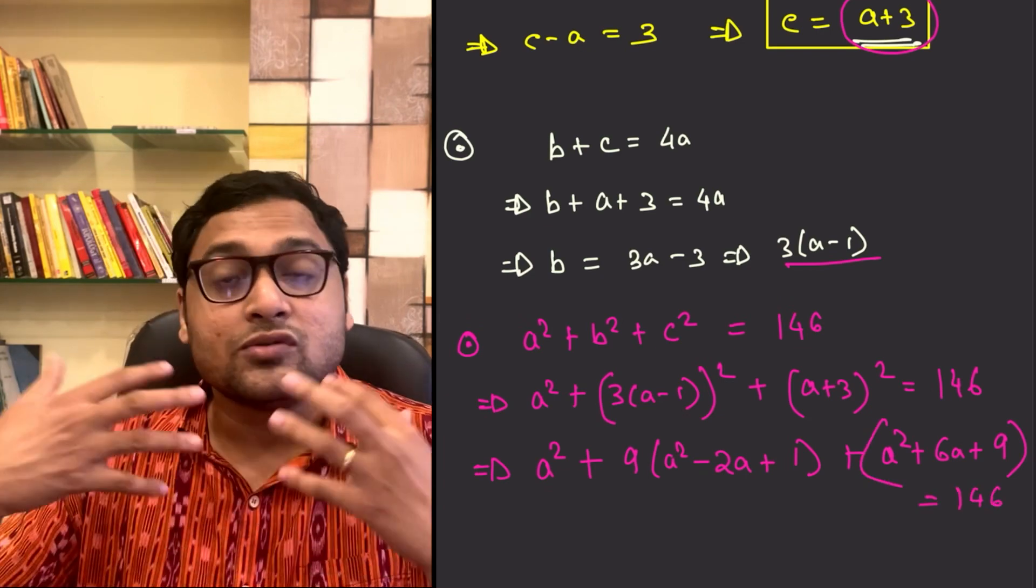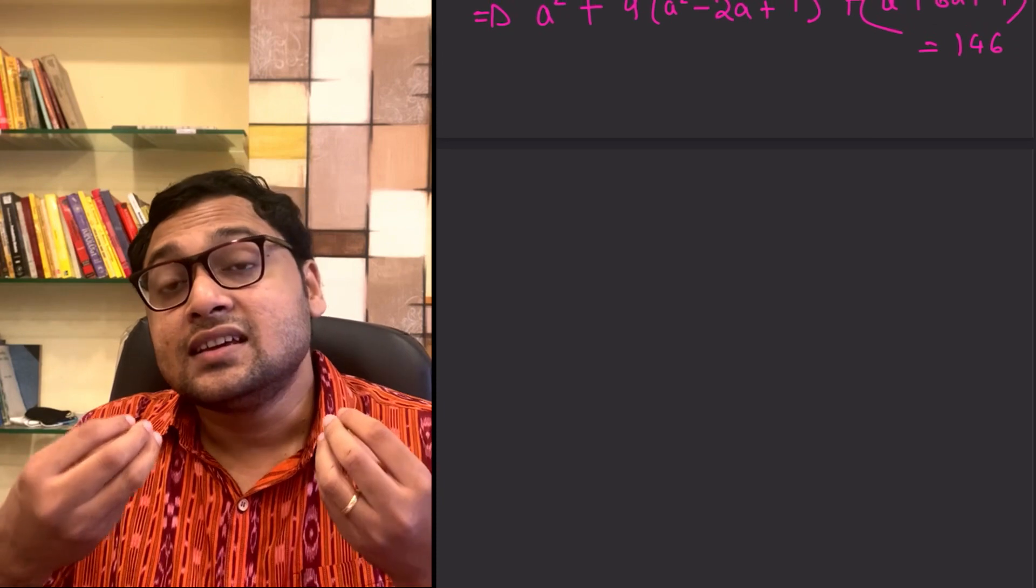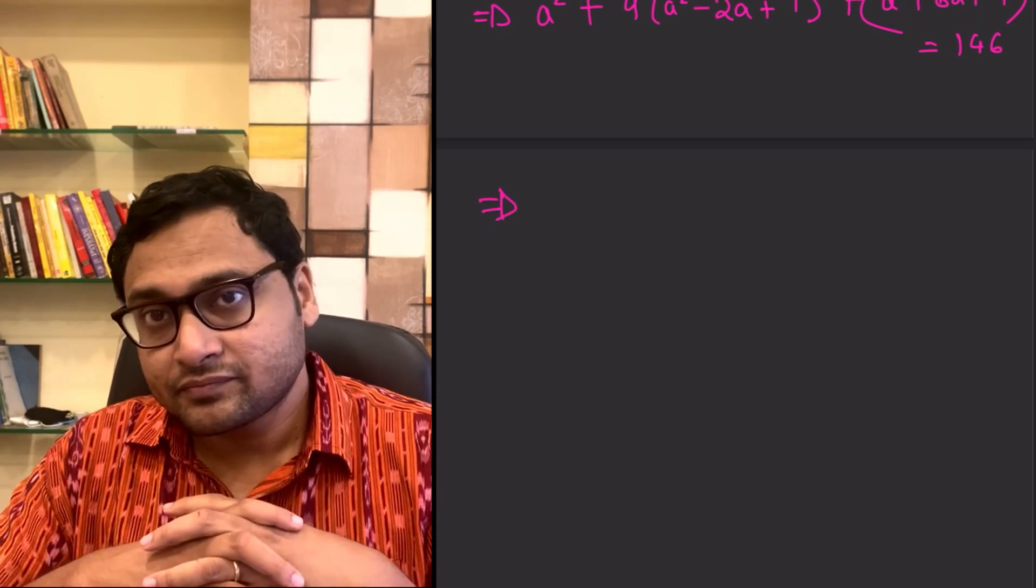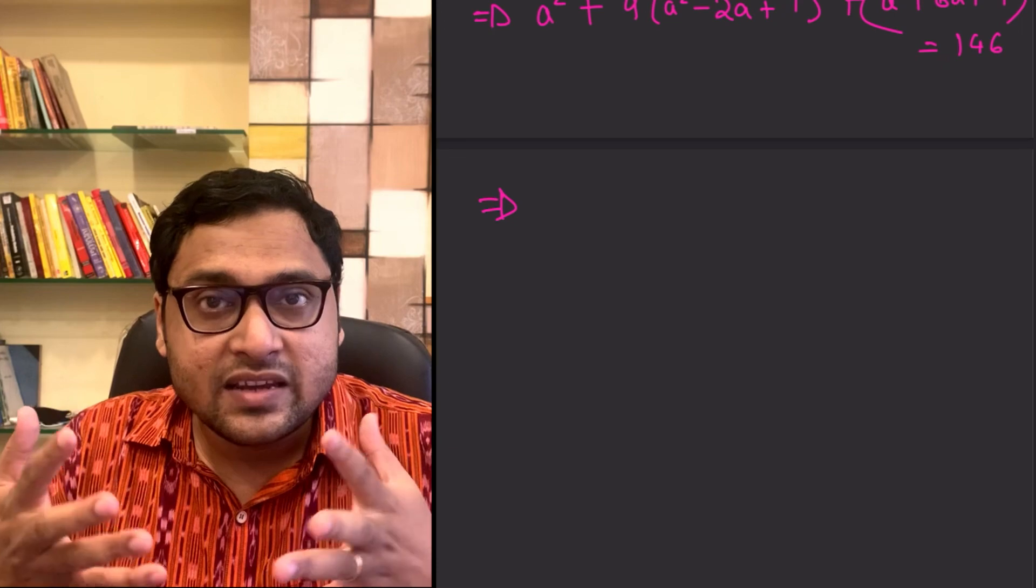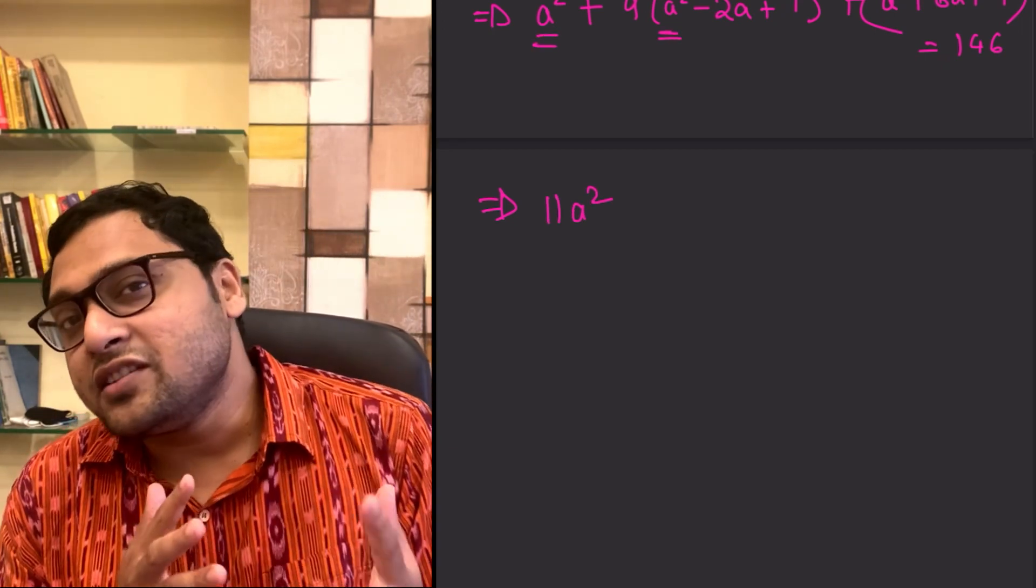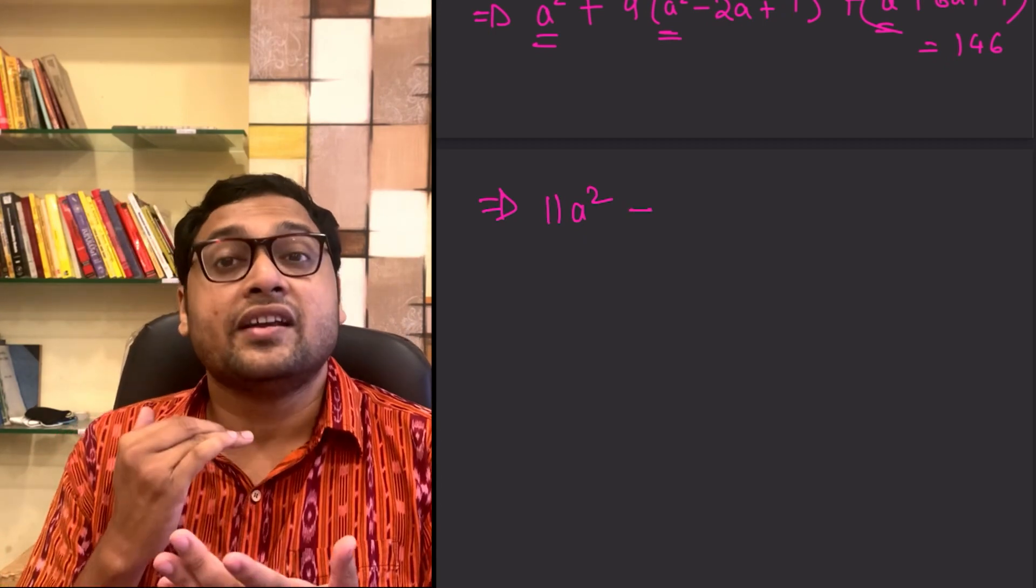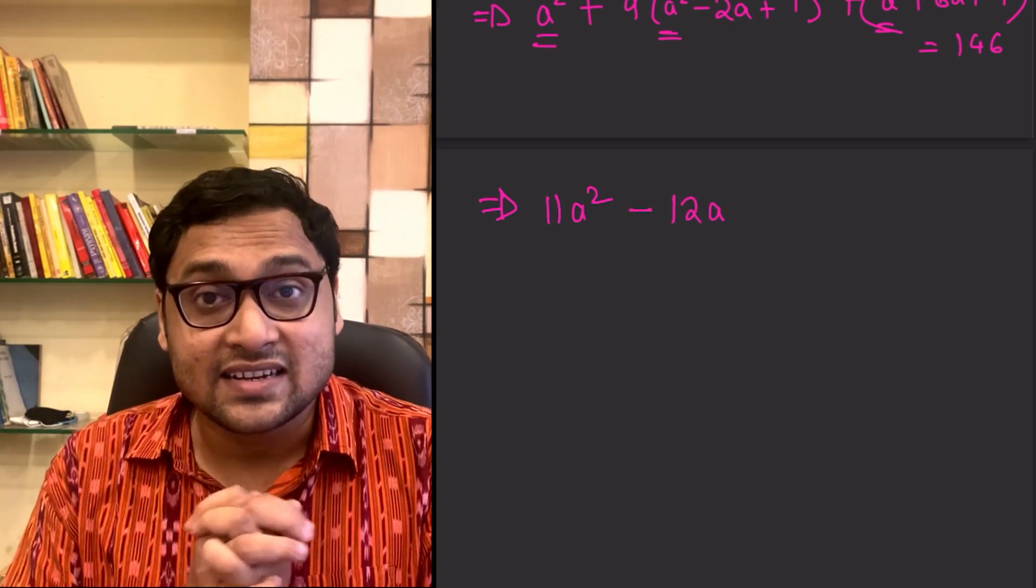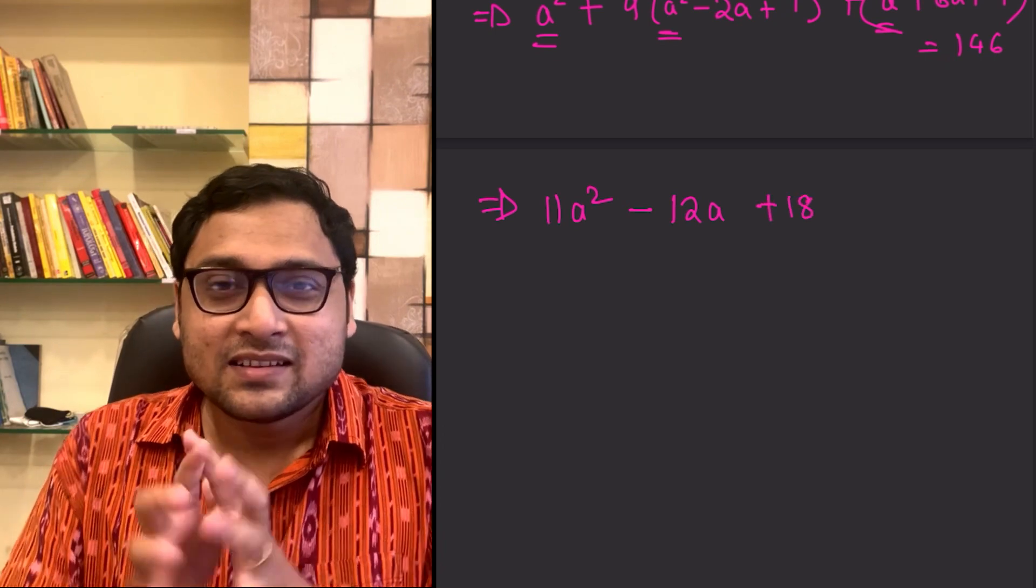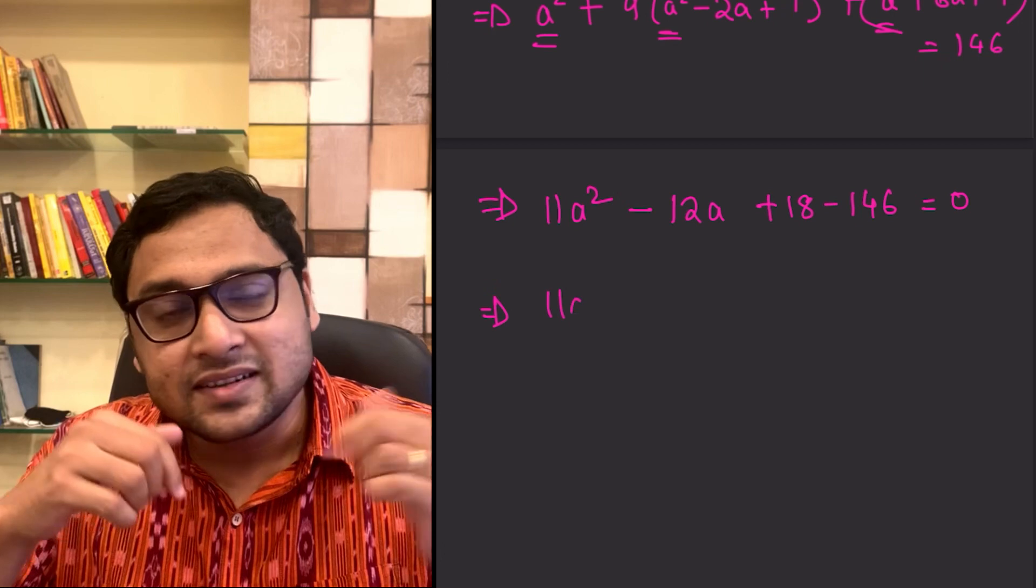And now, you can do some simplification to get a quadratic equation in terms of A. You can see on the screen what that will be. You can solve this quadratic to find the value of A. And using A, you can find out B, you can find out C. Hence, you can find out the entire number. So, I want you to finish this off in the comment section.